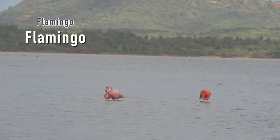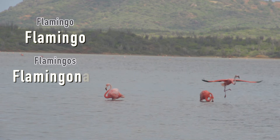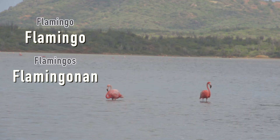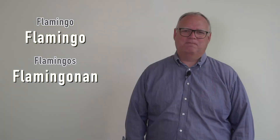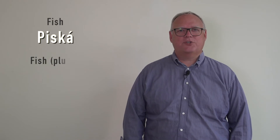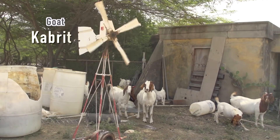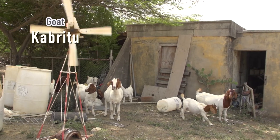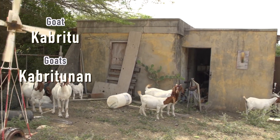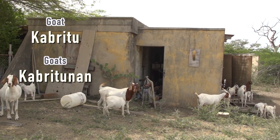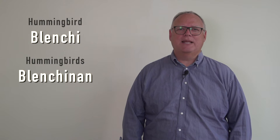Flamingo — flamingo, flamingos — flamingonan. Fish — piská, fish (plural) — piskanan. Goat — kabritu, goats — kabritunan. Hummingbird — blenchi, hummingbirds — blenchinan.